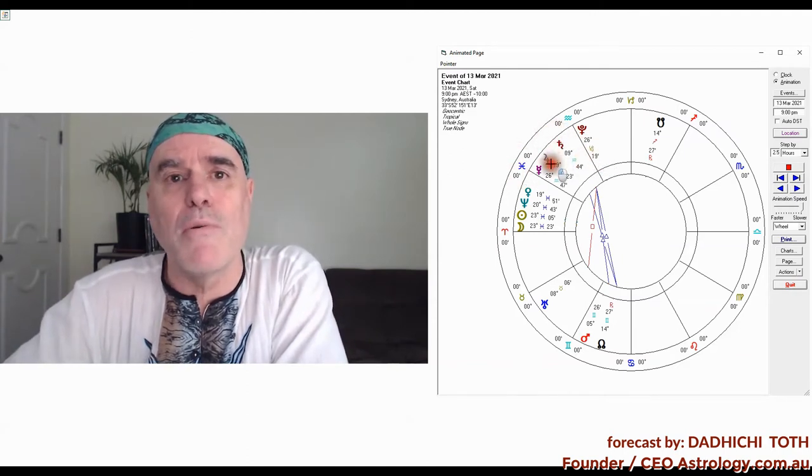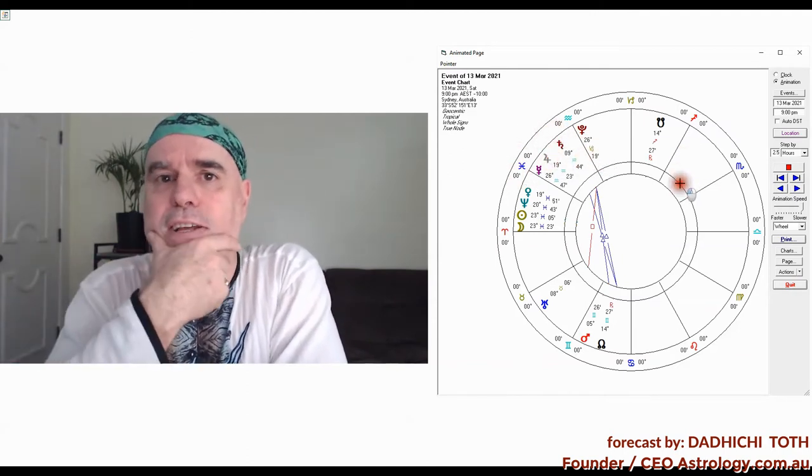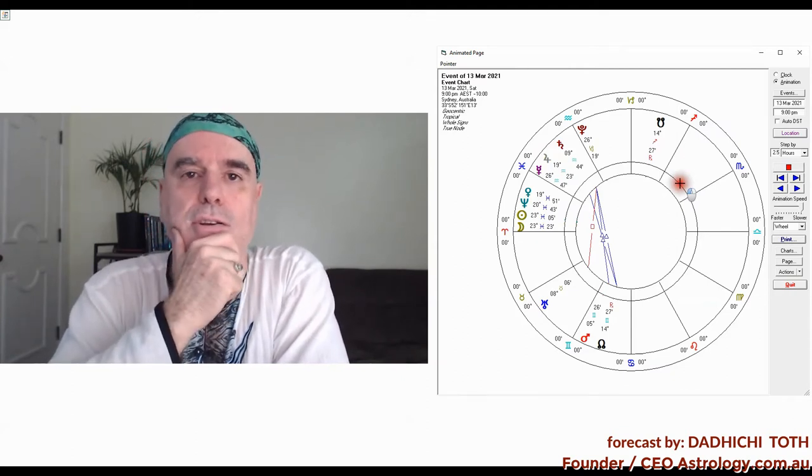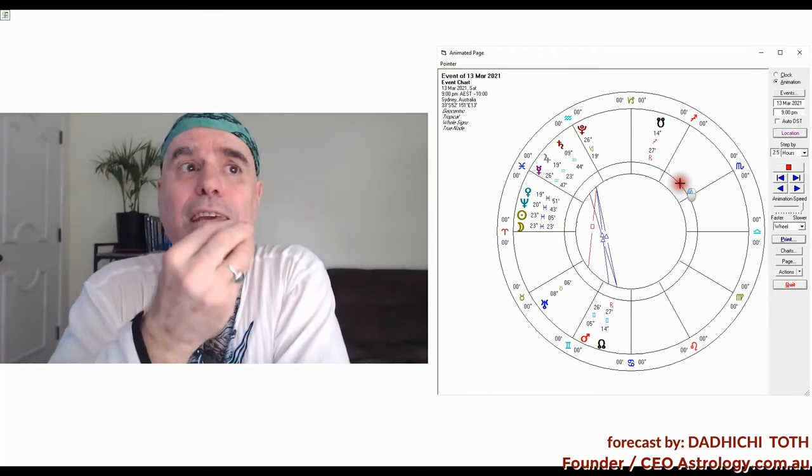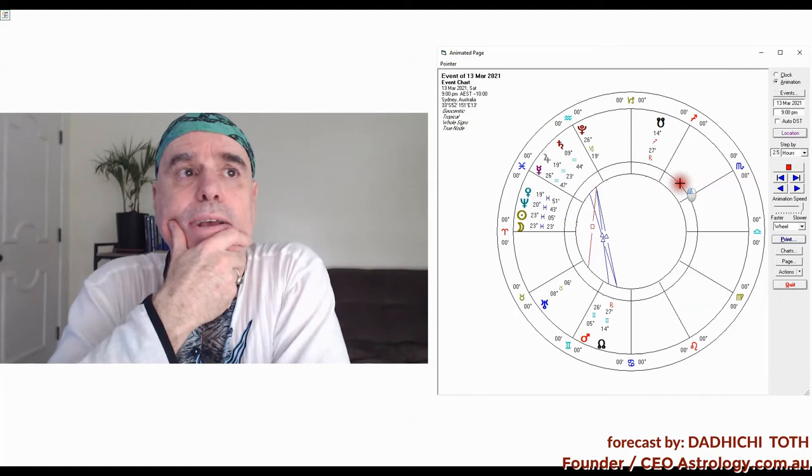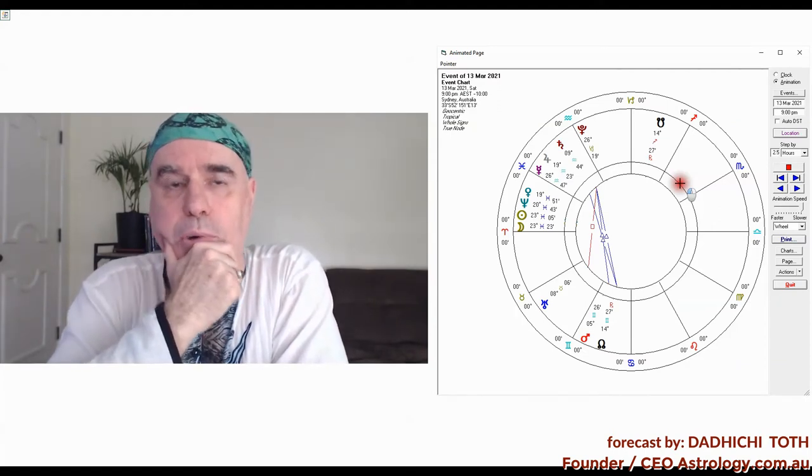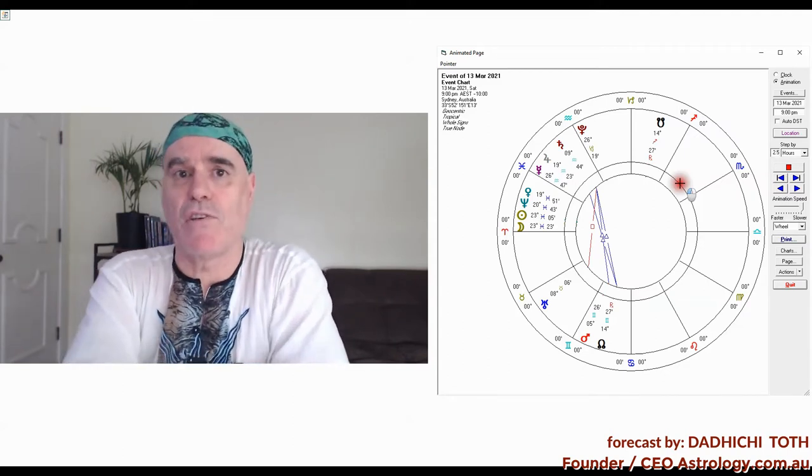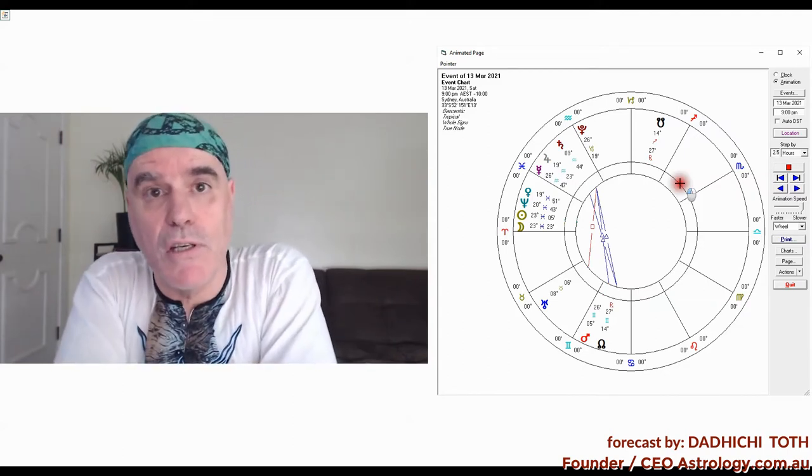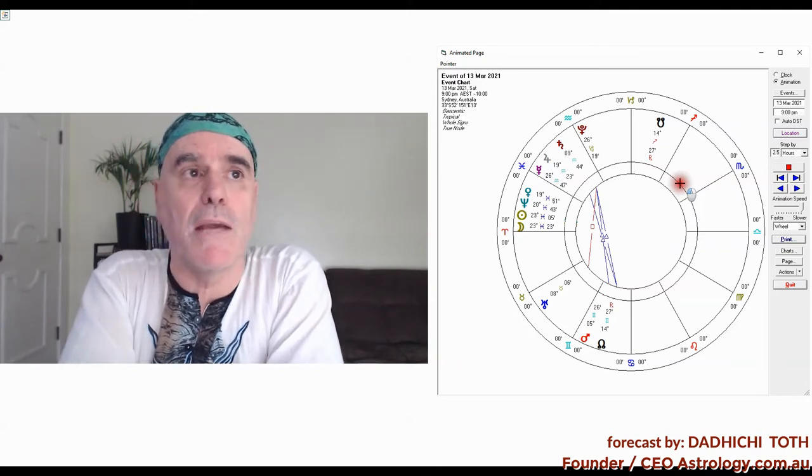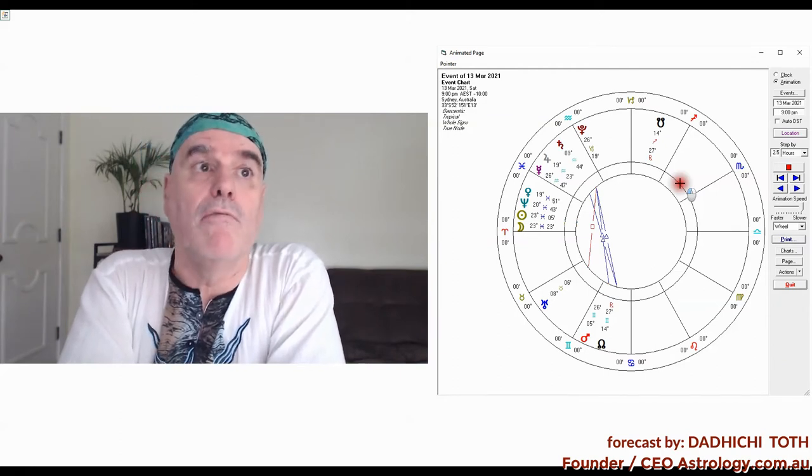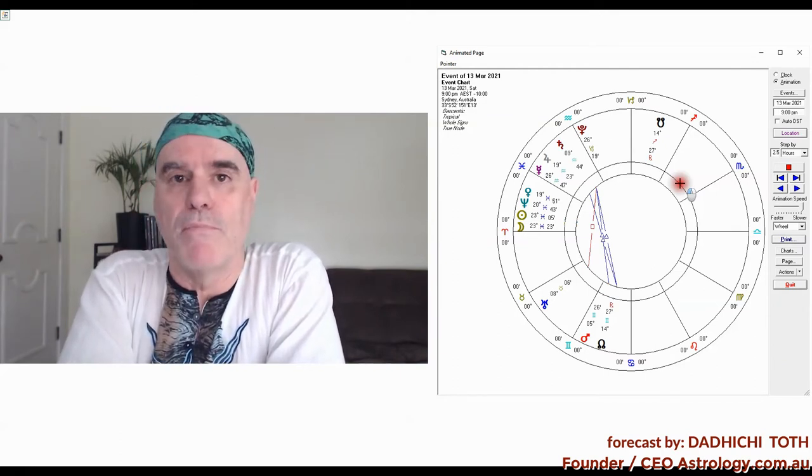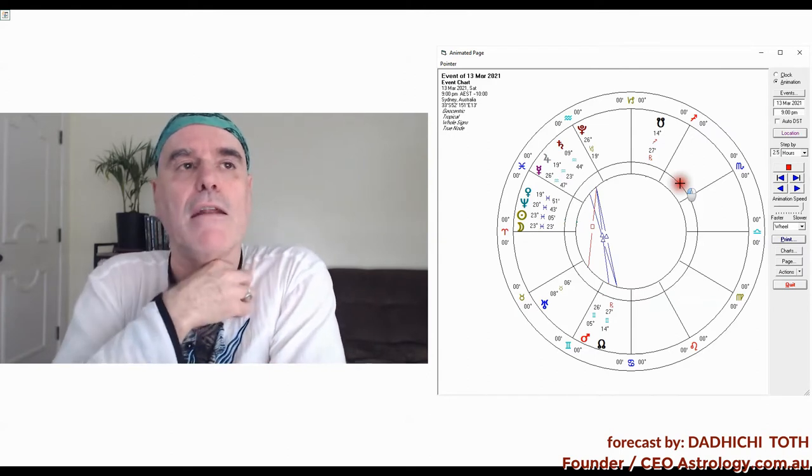You notice here in the natural zodiac, we talked about this last year, that great conjunction, the grand conjunction of Jupiter and Saturn there in the sign of Aquarius. Aquarius is the progressive sign. In the sidereal zodiac, which is my preferred zodiac, but I don't like to confuse people, that conjunction actually took place in the debilitation sign of Jupiter.